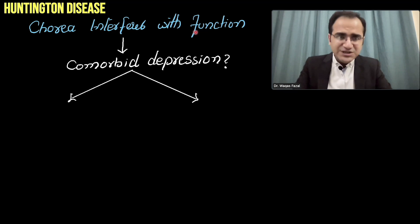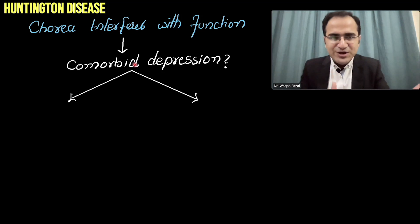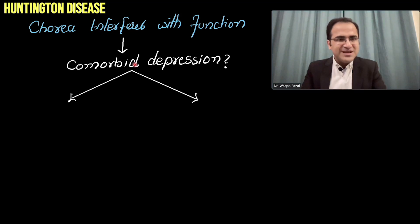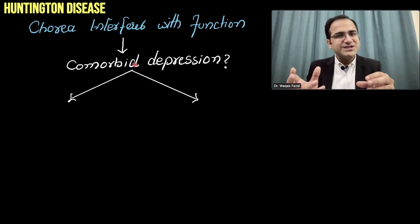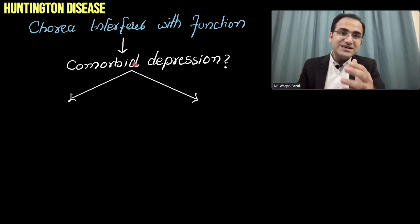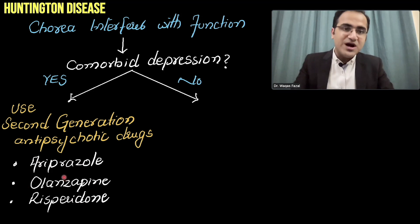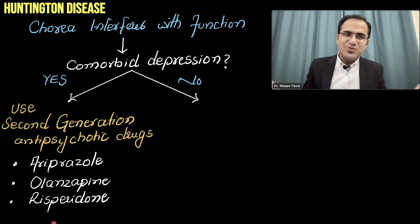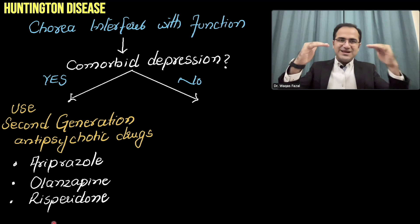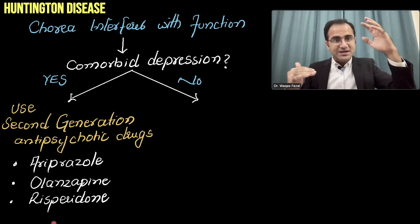If chorea interferes with function, check for comorbid depression first, because some anti-chorea medications worsen depression. In patients with comorbid depression, use second-generation antipsychotics such as aripiprazole, olanzapine, or risperidone. These block dopamine receptors, counteracting the excess dopamine that drives the abnormal movements.